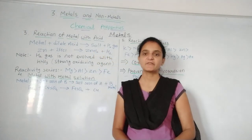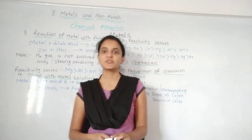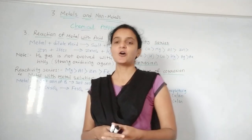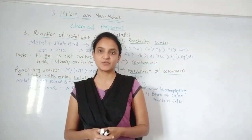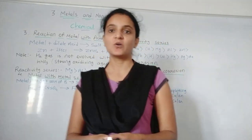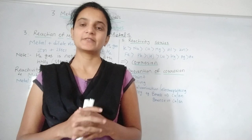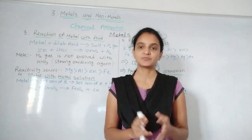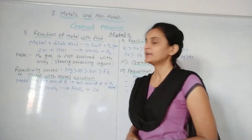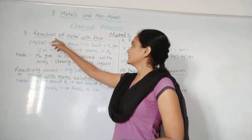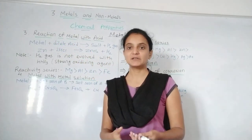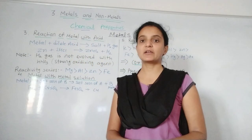Hello viewers. In our previous video we have seen two properties of metals: how metals react with oxygen and how metals react with water. Now we are starting with the third property of metal — the reaction of metal with acid, meaning how the metal can react with acid.